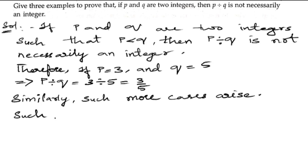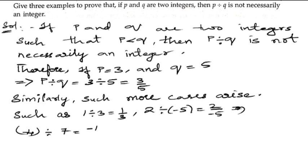Such as: 1 by 3, which can be written as 1 divided by 3; 2 divided by negative 5, so we get 2 by -5 or -2 by 5; negative 4 divided by 7, so we can write -4 by 7, and so on.